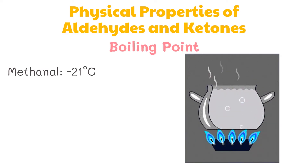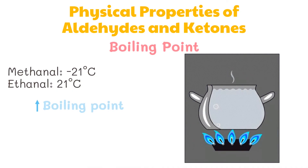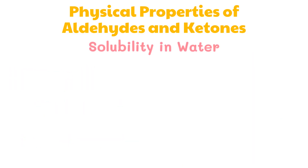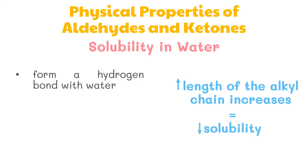Methanal, which is a gas, has a boiling point of negative 21 degrees Celsius. On the other hand, ethanal has a boiling point of 21 degrees Celsius, meaning it boils at close to room temperature. The other aldehydes and ketones are liquids, with boiling points rising as the molecules get bigger. The temperature of the boiling point is governed by the strengths of the intermolecular forces. The lower members, such as methanal and propanone, are miscible with water in all proportions because they form hydrogen bonds with water. As the length of the alkyl chain increases, the solubility of aldehydes and ketones decreases rapidly because the number of carbon atoms increases in the chain.